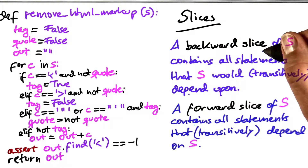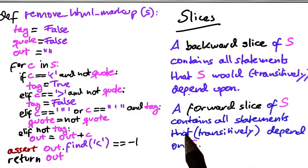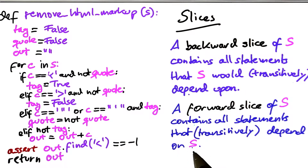When there's backward slices, there's also forward slices. A forward slice contains all statements that depend on a specific statement.